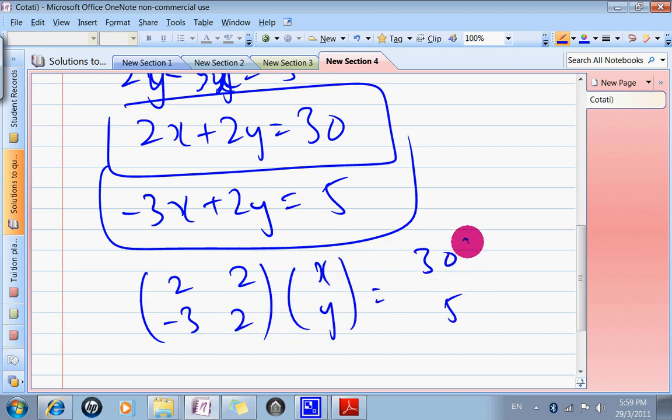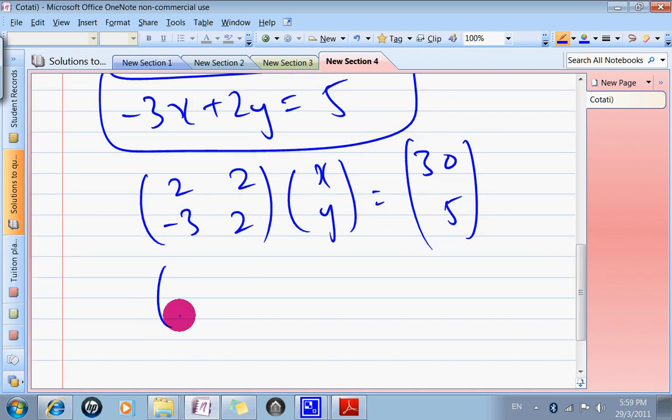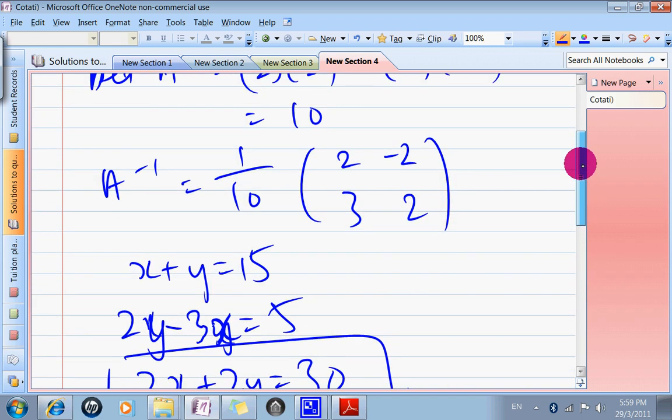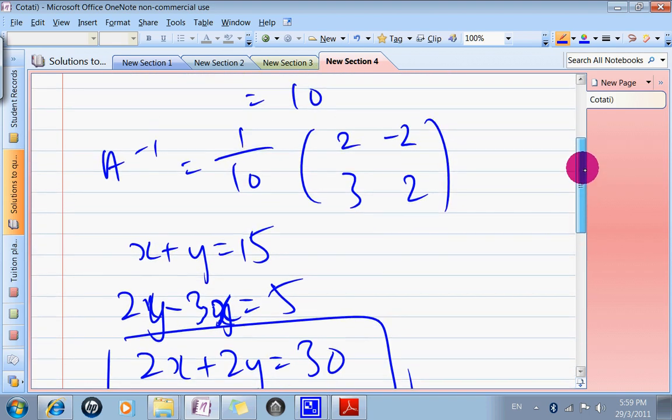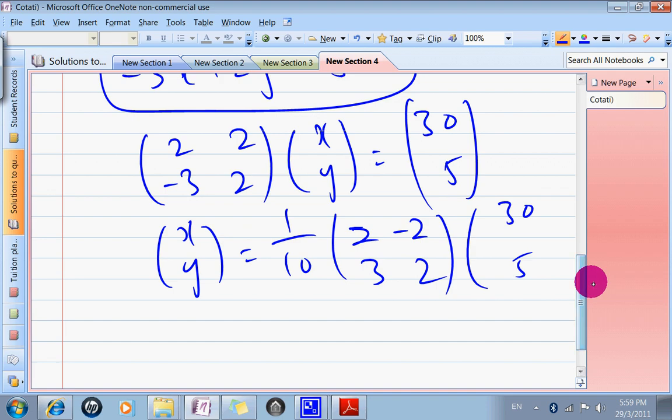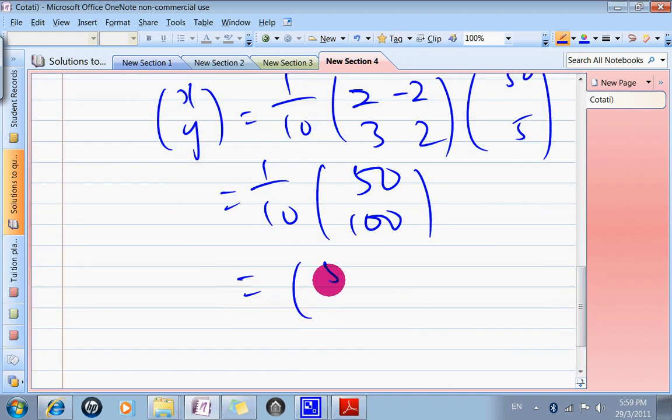So x, y equals to the inverse matrix times 30, 5. The inverse matrix is 1 over 10, 2, negative 2, 3, 2. So I'm going to multiply. This times this minus this times this will give me 50. This times this plus this times this will give me 100. So the solution is 5, 10. So answer x equals to 5, y equals to 10. That concludes our example.